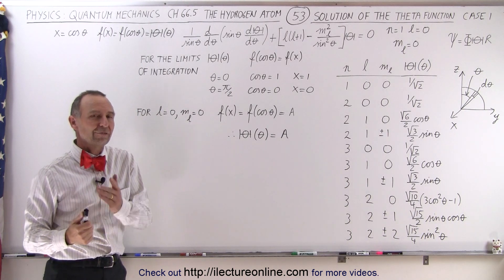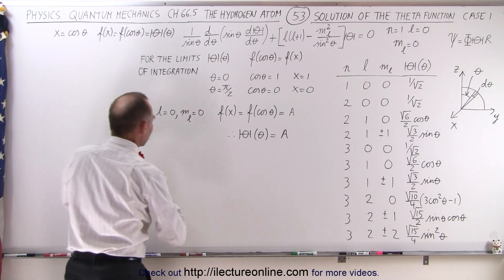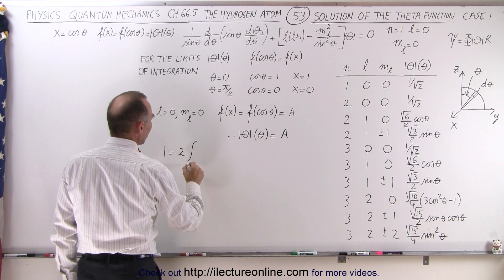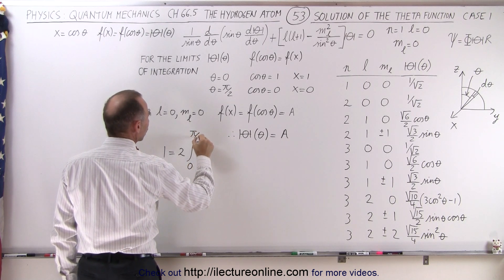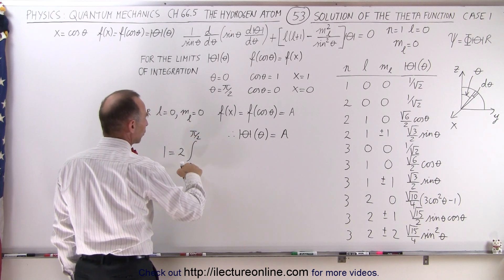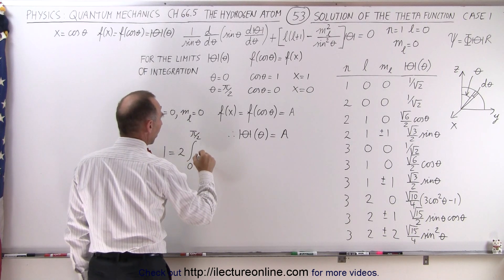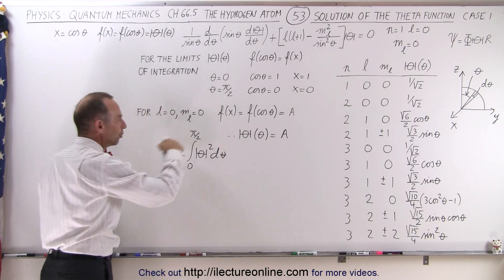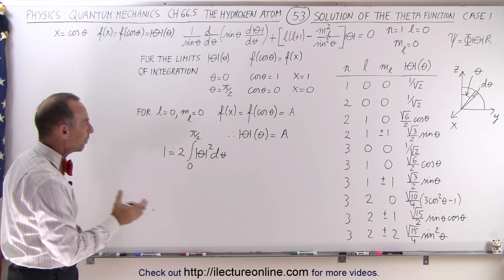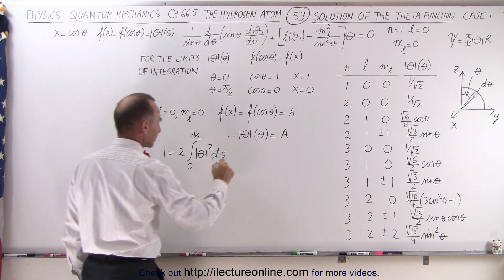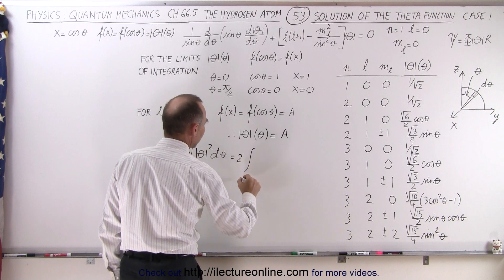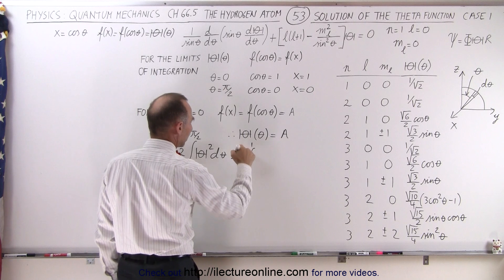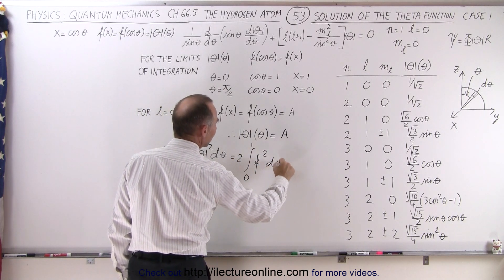Now we're going to have to normalize that to find the value for a. We can say that 1 is equal to 2 times the integral from 0 to pi over 2, because we're only doing half the distance, so we have the double integral, of the function squared times d theta. Now we're going to change that to the f function, so this is equal to 2 times the integral from 0 to 1 of the f function squared times dx.